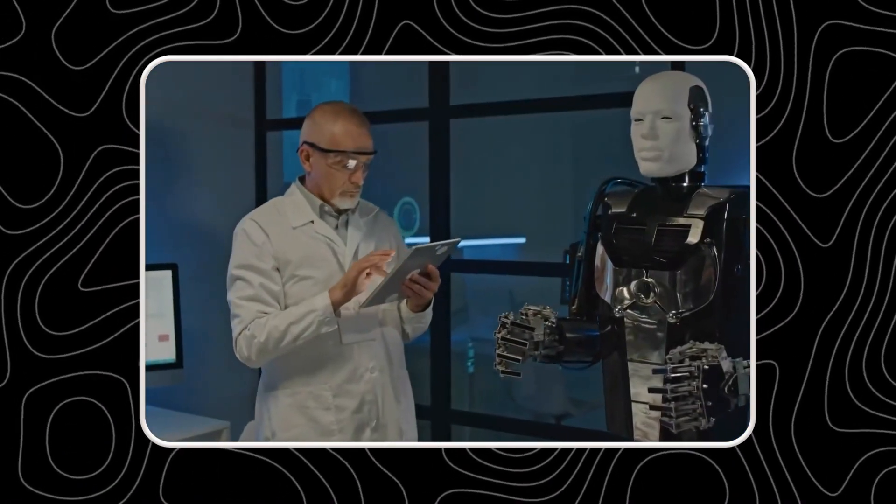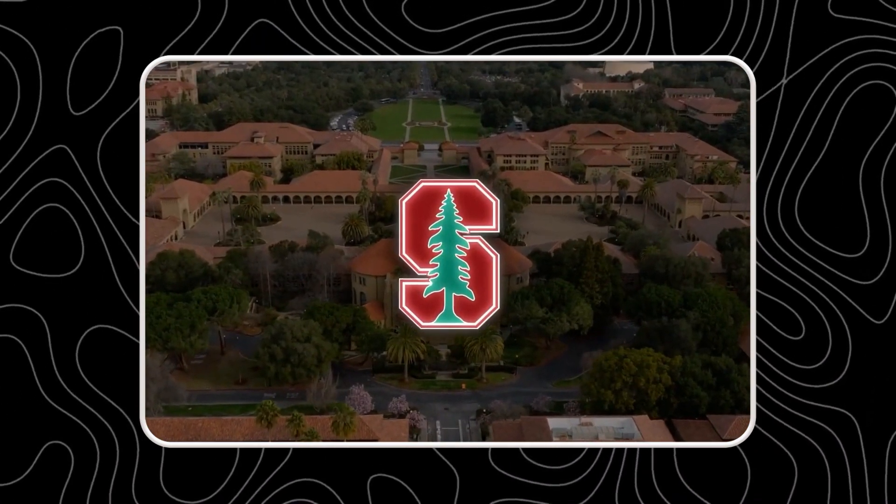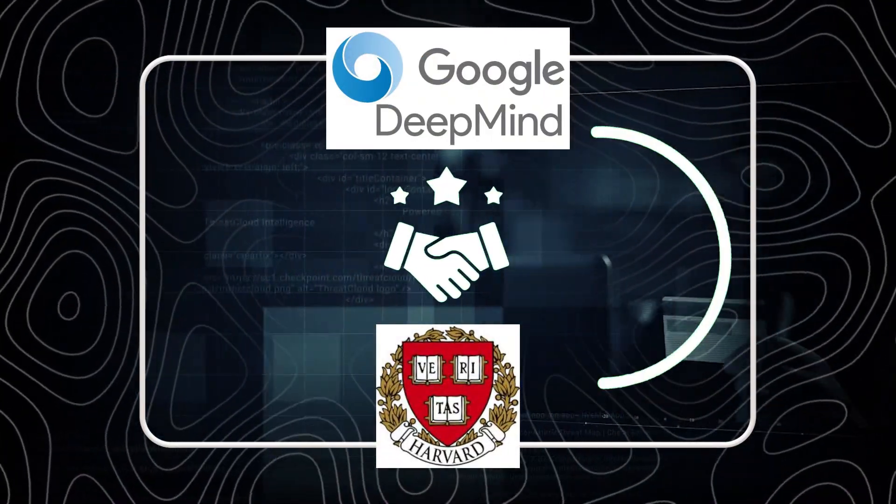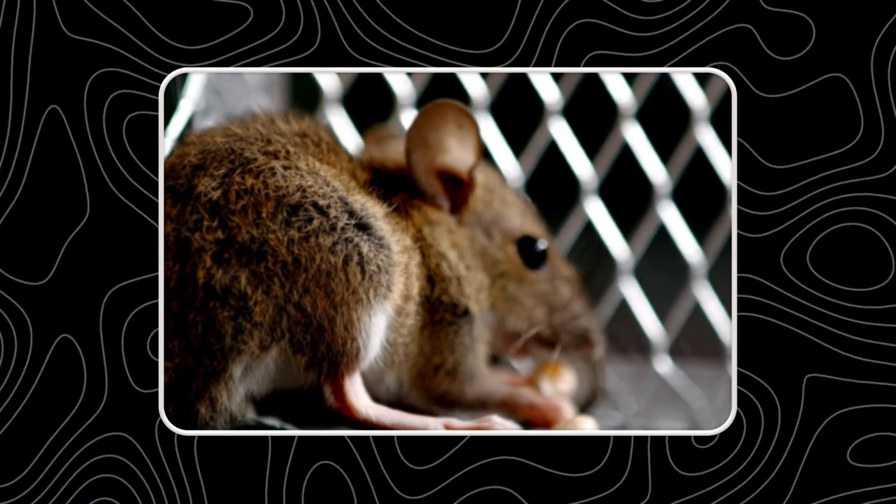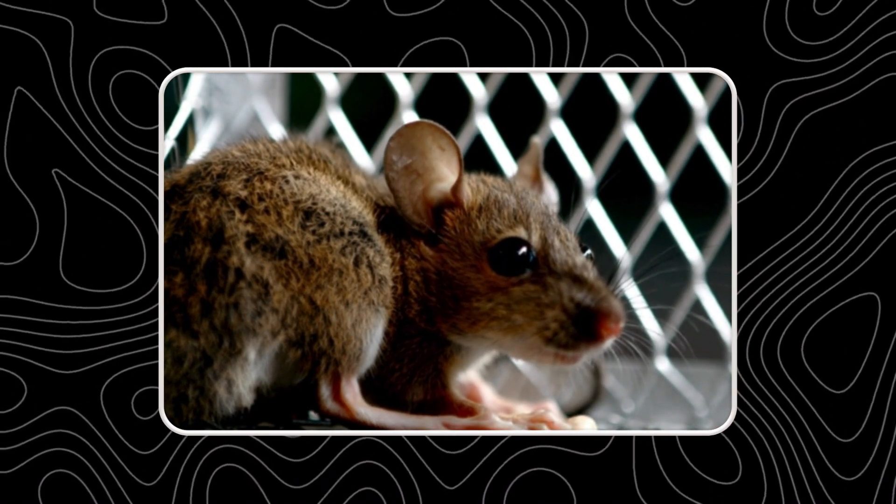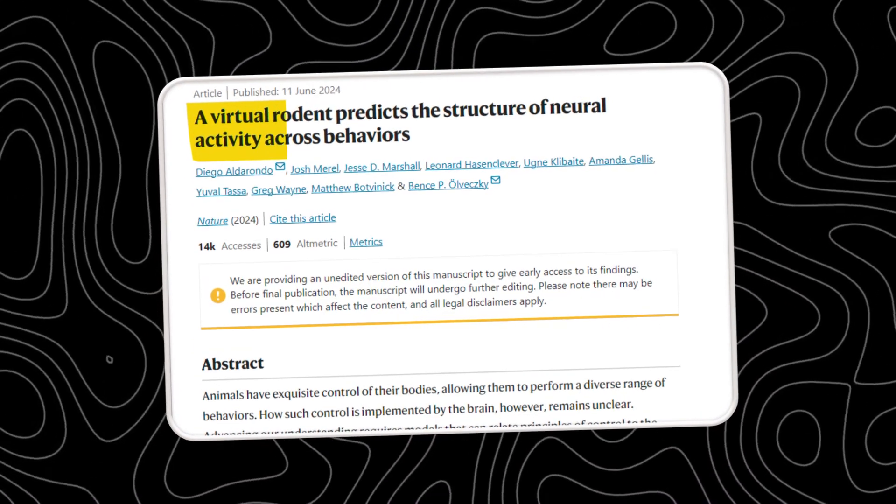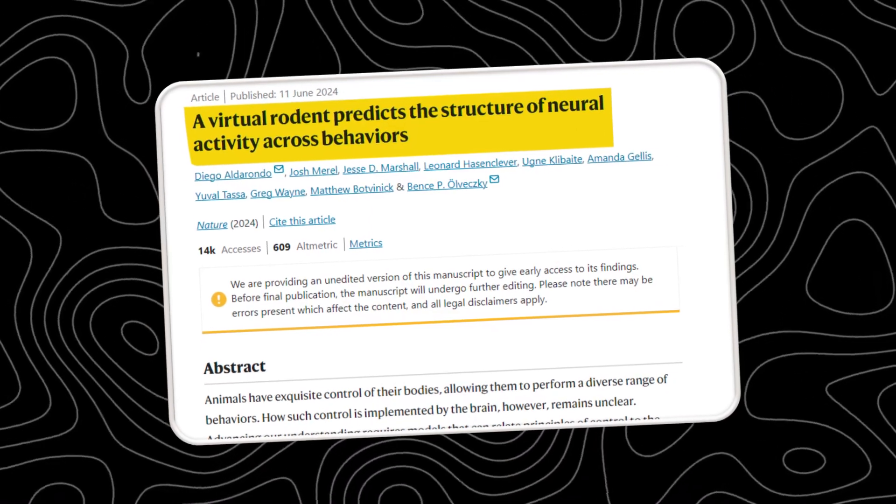But Google DeepMind is not satisfied with just creating superhuman AI. They also want to understand how natural intelligence works, especially the human brain. That's why they have collaborated with researchers from Harvard University to create an artificial brain for a virtual rat. This groundbreaking work, published in the journal Nature, provides new opportunities for studying brain function.